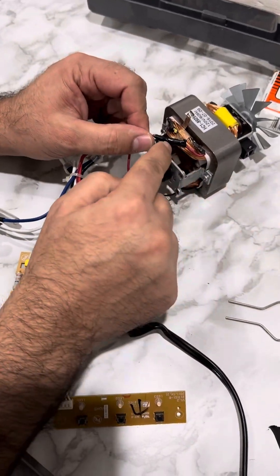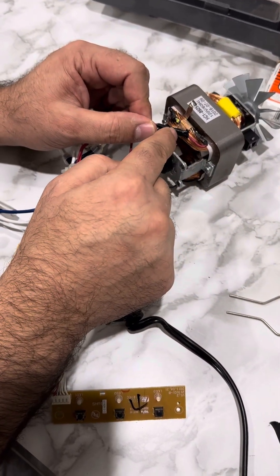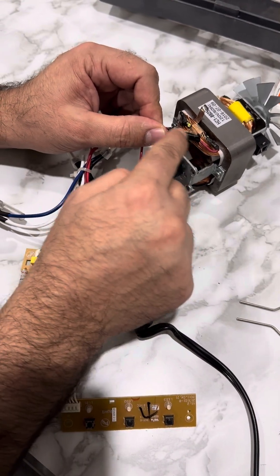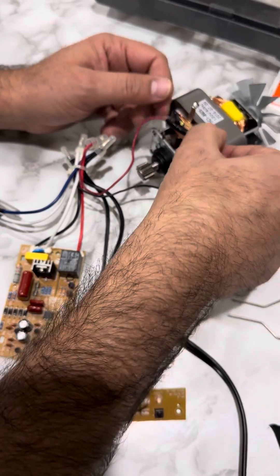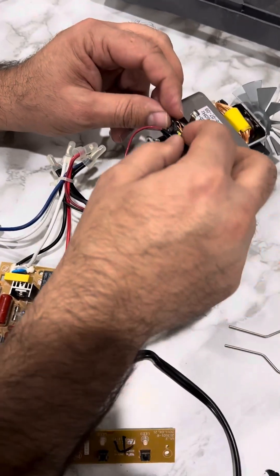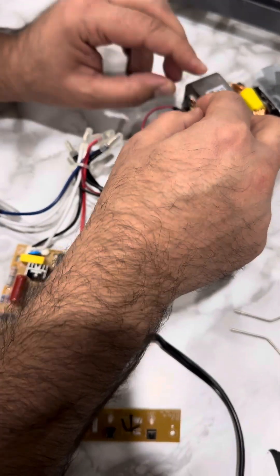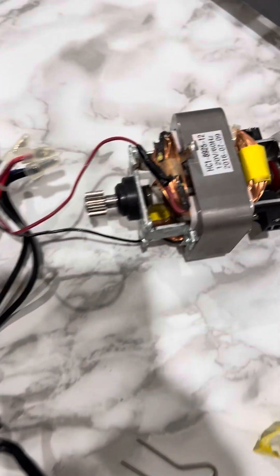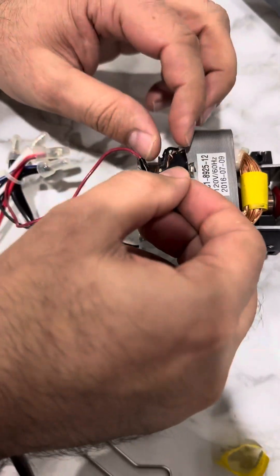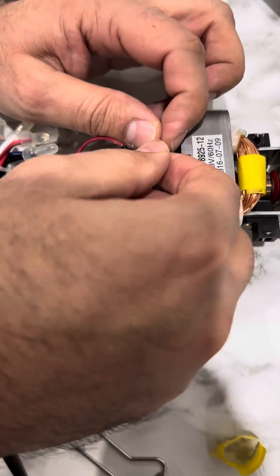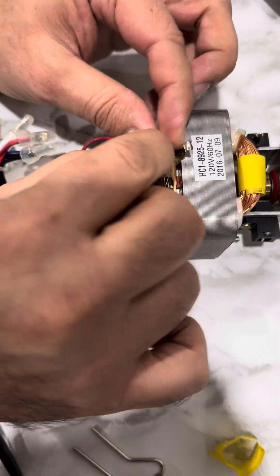So now I put some electrician tape here to cover the part, and I have to cover those wires as well. I just put a small amount of tape so it does not become too big here. I don't want to expose any wires.